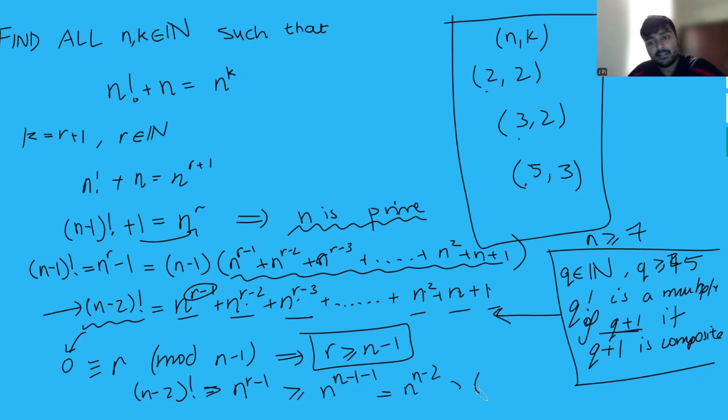But n minus 2 to the n minus 2 is the product of n minus 2, n minus 2s, and so that's got to be bigger than n minus 2 factorial. And we get n minus 2 factorial is bigger than n minus 2 factorial, and that's obviously a contradiction. So, what does this tell us? This just tells us that n cannot be bigger than or equal to 7. And so, therefore, the only solutions are these three guys we found earlier, 2, 2, 3, 2, and 5, 3.